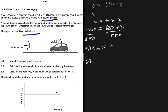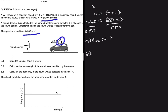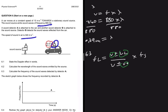6.3 asks us to calculate the frequency of the sound waves detected by detector A. Detector A is the vehicle on the left-hand side that is moving towards sound source B. To find the frequency detected by detector A, we use: frequency of listener equals V plus or minus velocity of listener, divided by V plus or minus velocity of source, multiplied by frequency of source. The velocity of the listener is 10 meters per second, and it is moving towards the sound source.